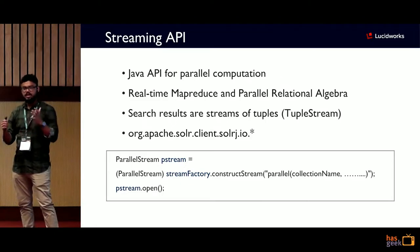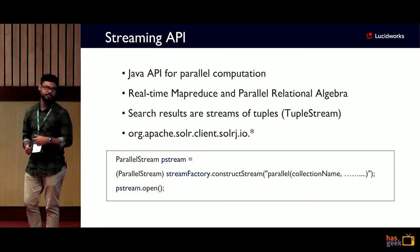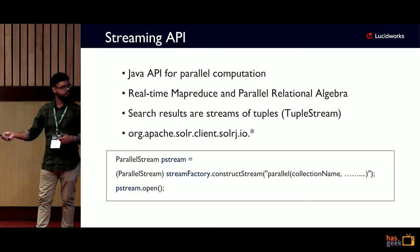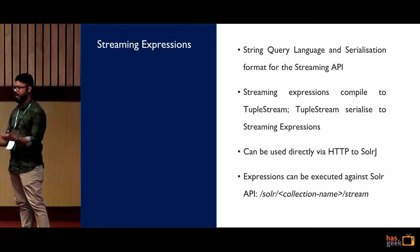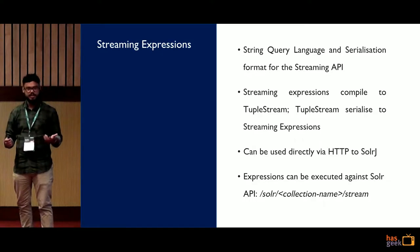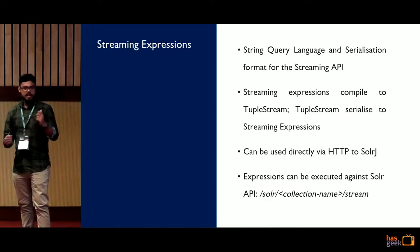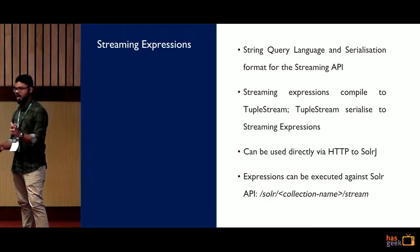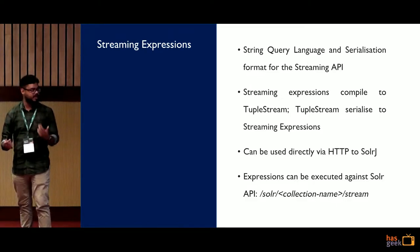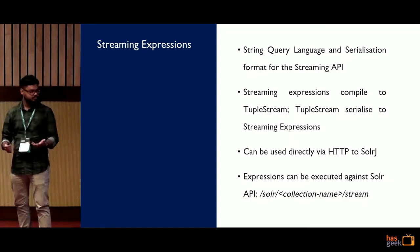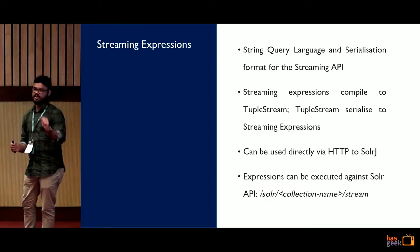All relatable streaming object APIs are available in the package org.apache.solr-j.io. To extend these capabilities to non-Java developers building applications in Ruby, Python, Perl, or any other language, streaming expressions were introduced. These are a string query language and the serialized format for the streaming API. An expression can compile to a TupleStream object, and a TupleStream object can be serialized back to a streaming expression. They can be executed directly via HTTP to a SolrJ, against a stream API implicitly defined in SolrJ itself.